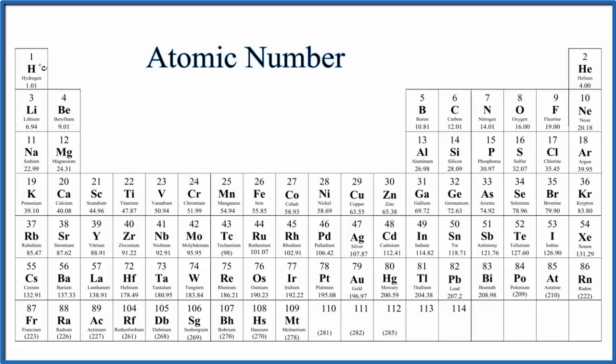The atomic number, that's the number above the element symbol. For hydrogen, the atomic number is 1. Helium, it's 2.